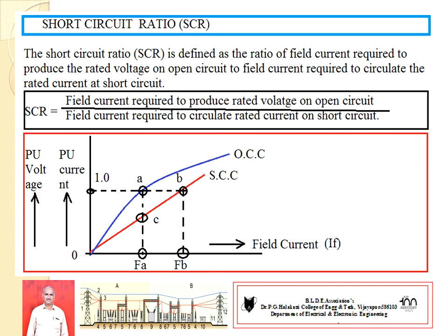SCR is defined as the ratio of field current required to produce the rated voltage on open circuit, to the field current required to circulate rated current at short circuit. You already know how to plot the OCC (open circuit characteristics) and SCC (short circuit characteristics) by varying the synchronous generator excitation, i.e., by varying the field current.